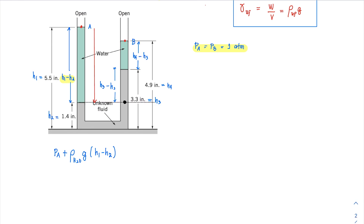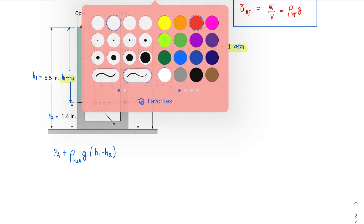You might think to add pressure going down and then subtract it going back up through the same fluid, but those contributions cancel out. The most practical approach — as long as you are moving across the same fluid — is to jump directly to the fluid level of that fluid. So from that shared fluid level, I will now measure pressure as I move upward.